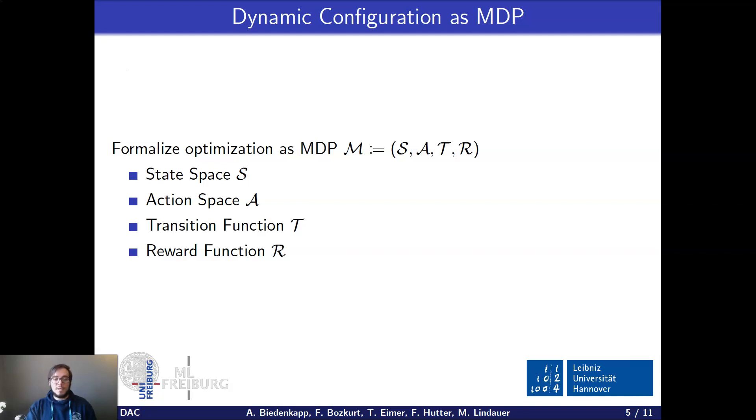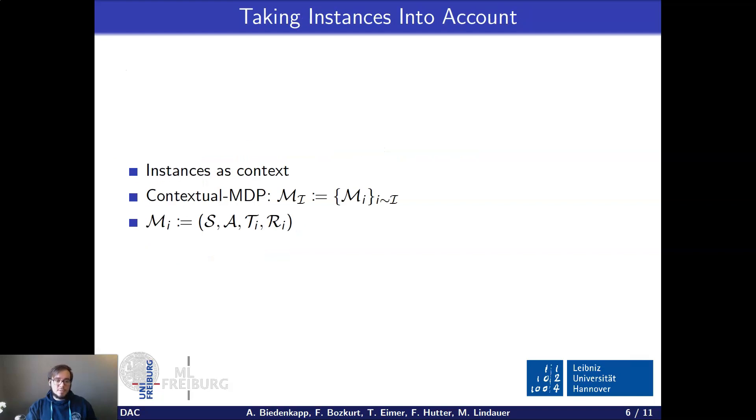And you might ask yourself now, okay, so I see we can configure per time step, but how do we get the configuration per instance? And to do that, we have to contextualize our MDP and contextualizing the MDP just means that we now have a set of MDPs with a special relationship because the MDPs share a common state and action space, but have different transition and reward functions.